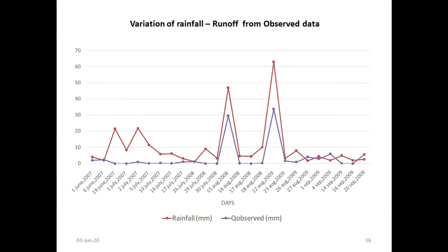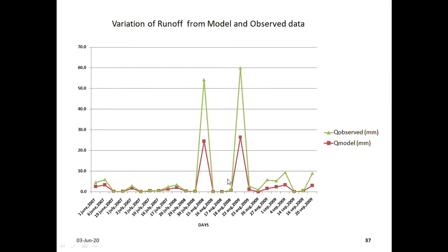This is the graph showing rainfall runoff from the observed data. You can see the rainfall and observed for all the 25 values here. This is another graph which is showing runoff model of the observed and predicted data.